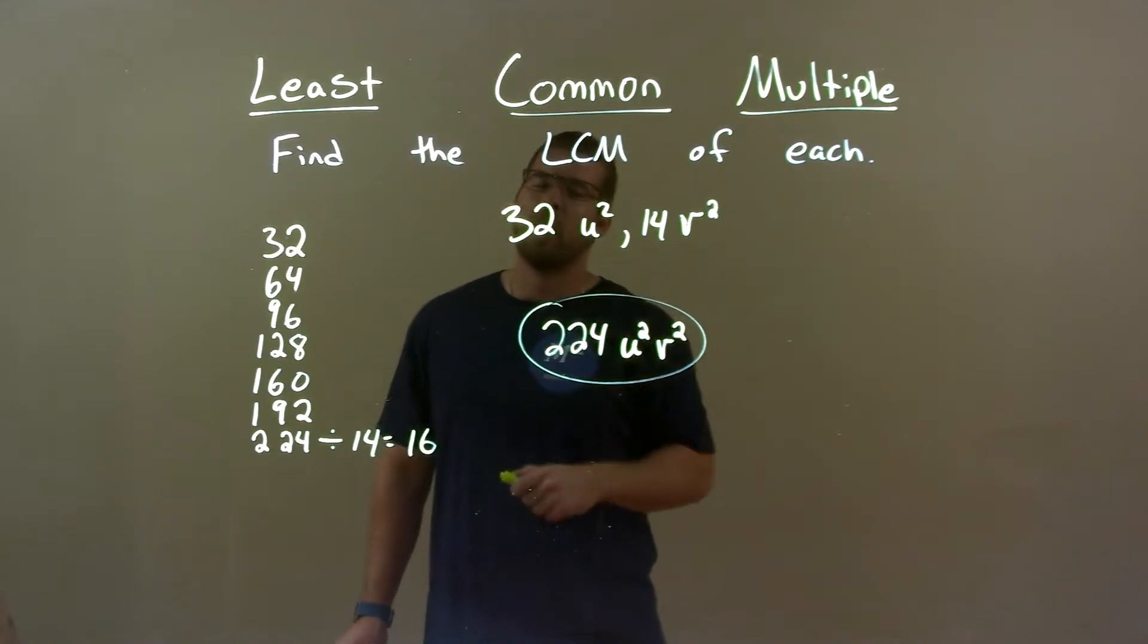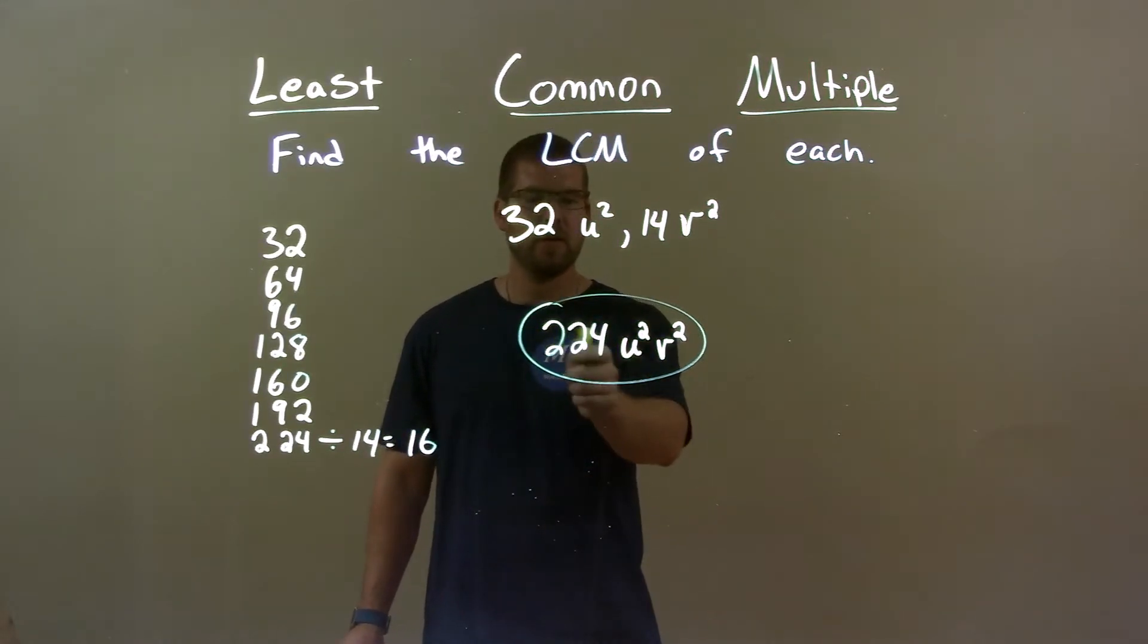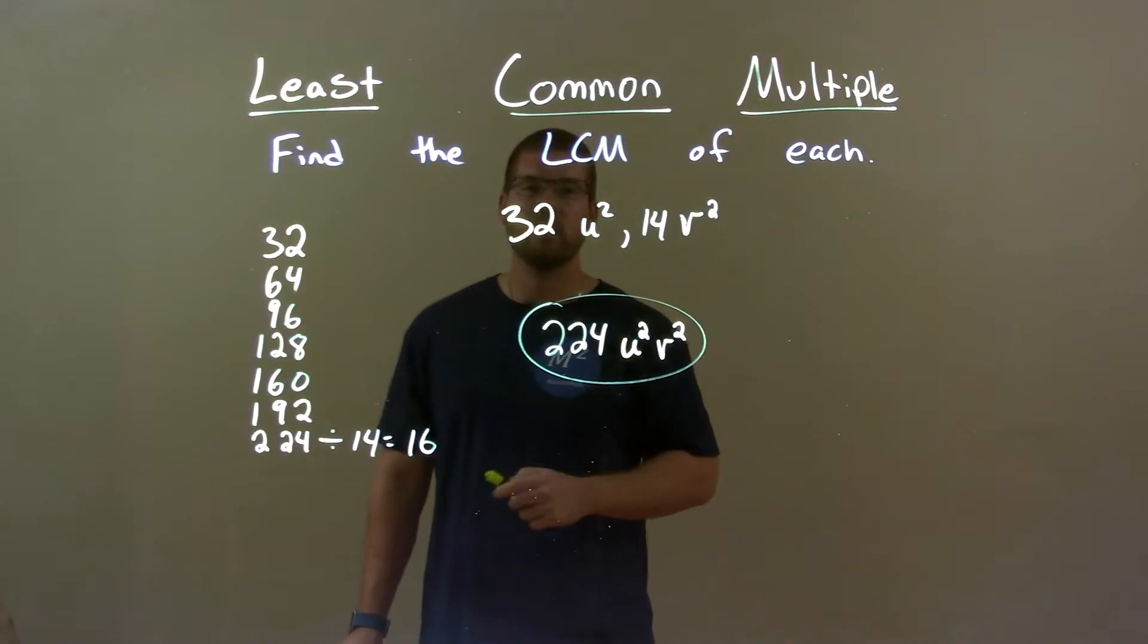Got that there. We encompass all of our variables. So my final answer again is 224u squared v squared.